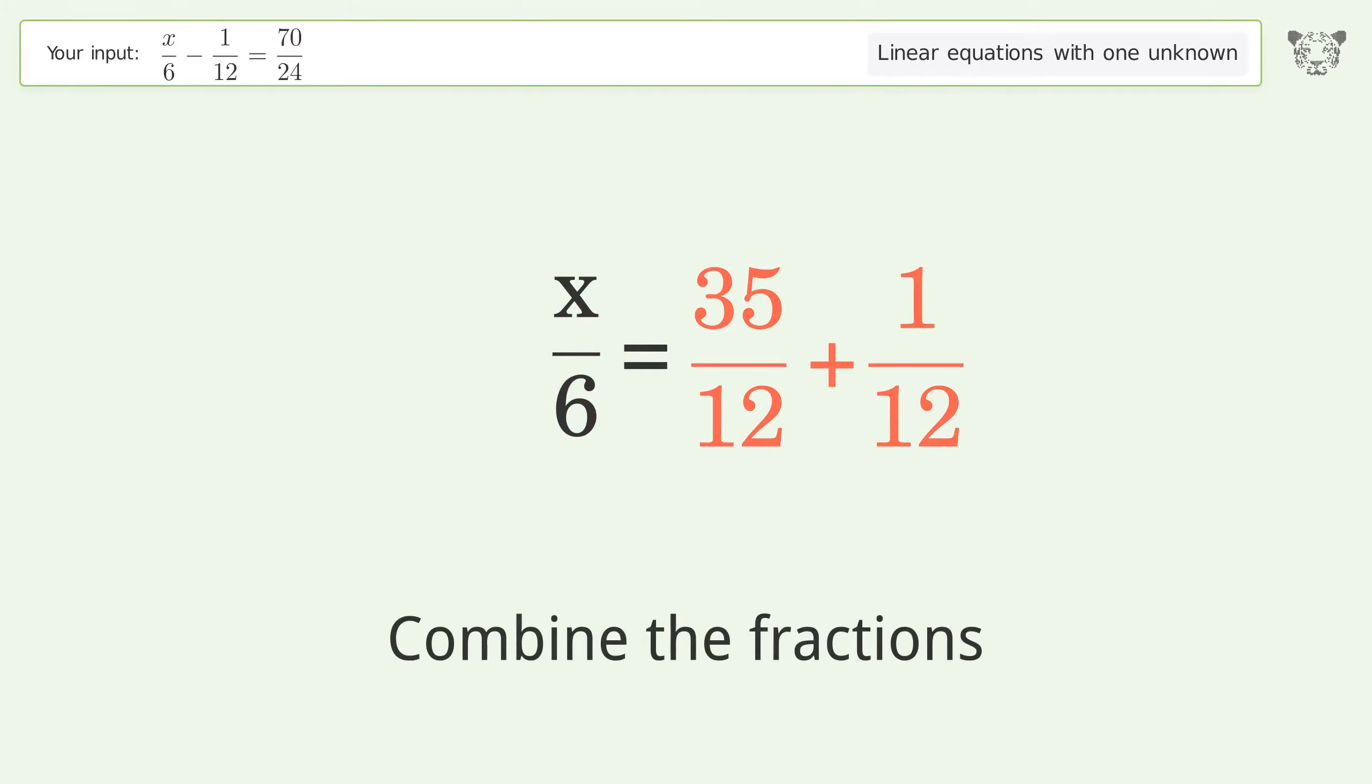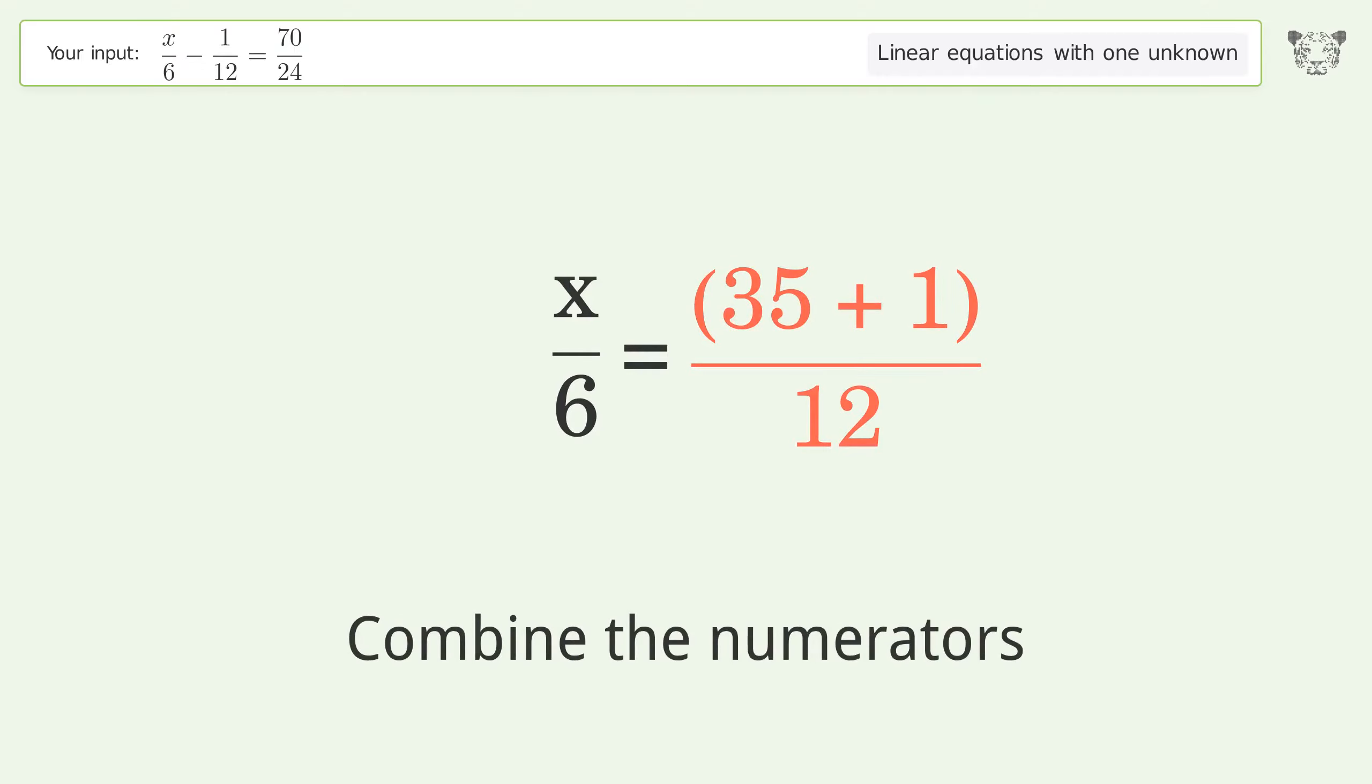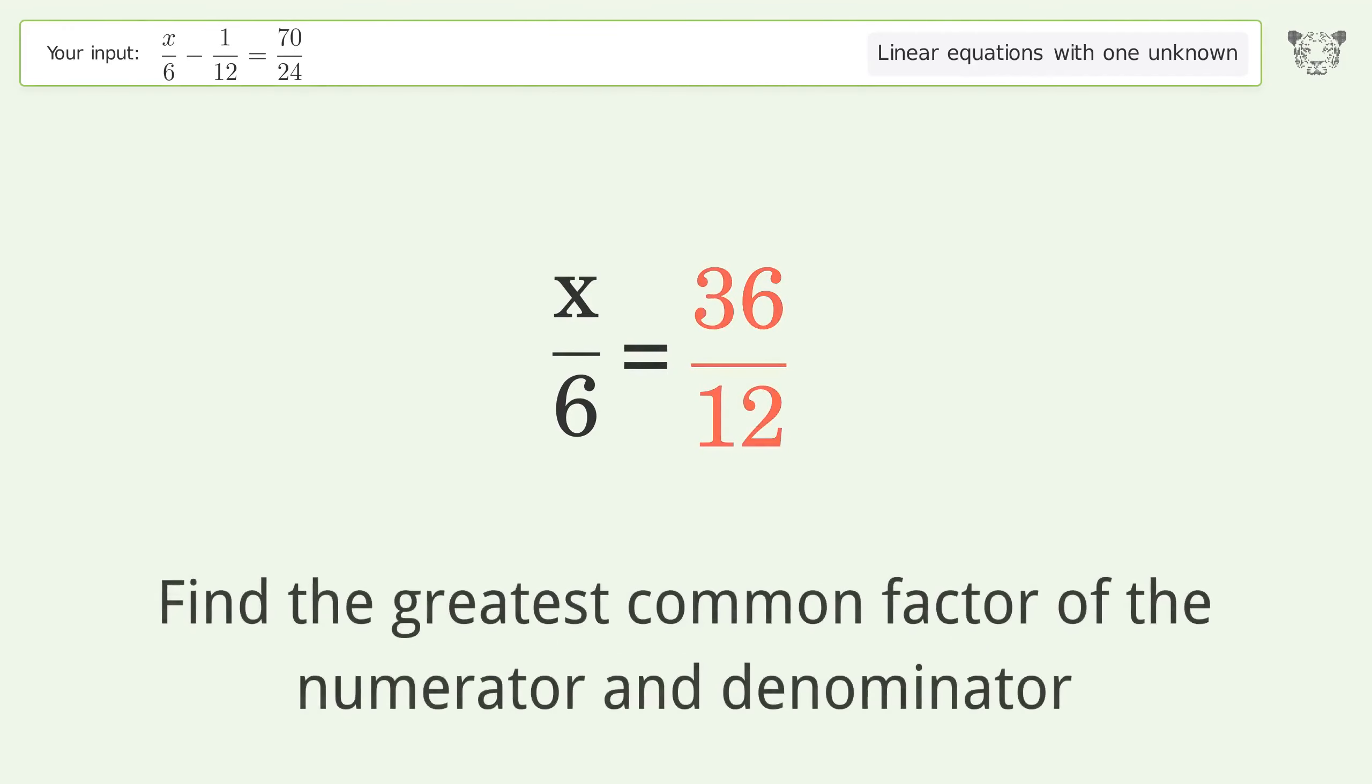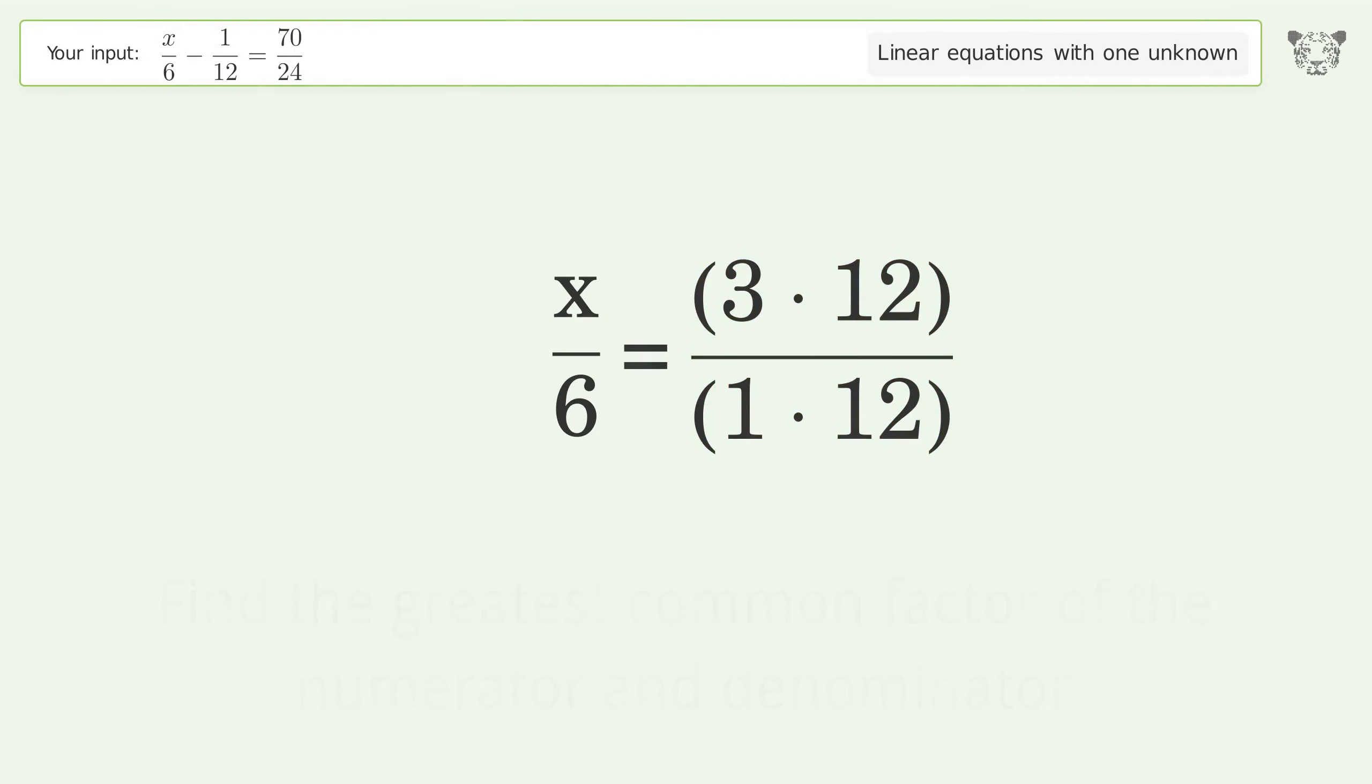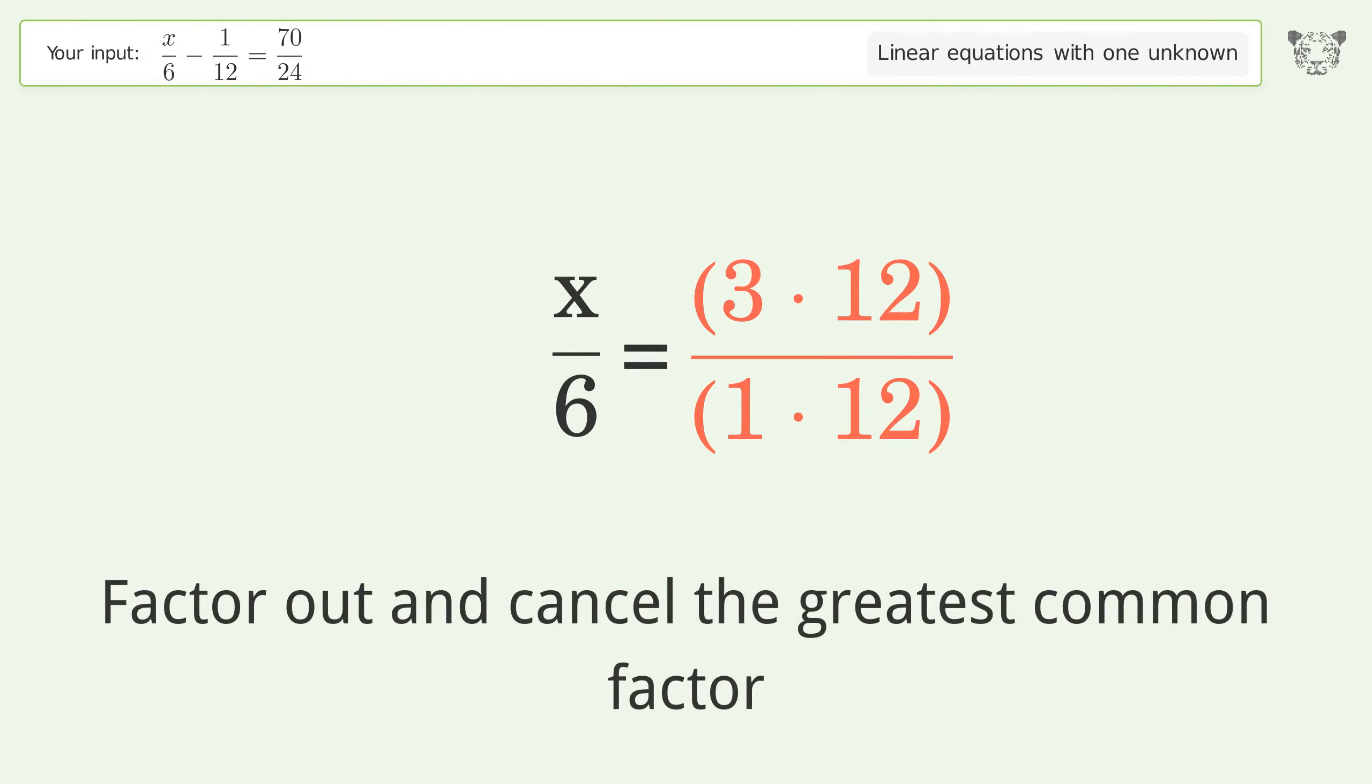Combine the fractions. Combine the numerators. Find the greatest common factor of the numerator and denominator. Factor out and cancel the greatest common factor.